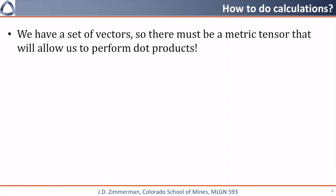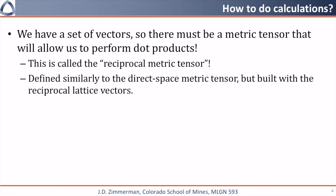we will call this the reciprocal metric tensor, which we represent as G star. The reciprocal metric tensor is defined the same way as we did for the direct space metric tensor, but with reciprocal space vectors.